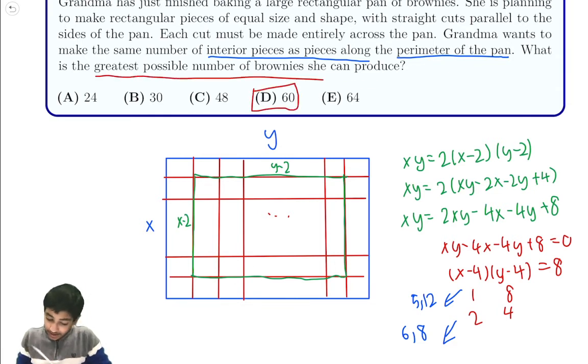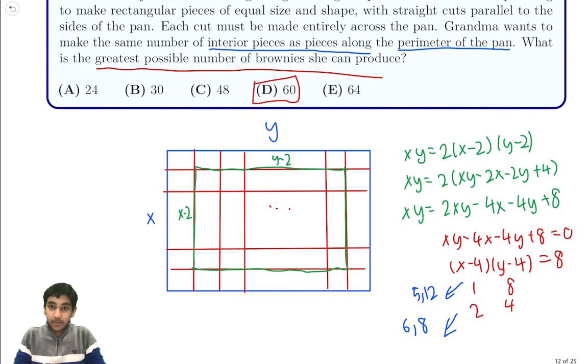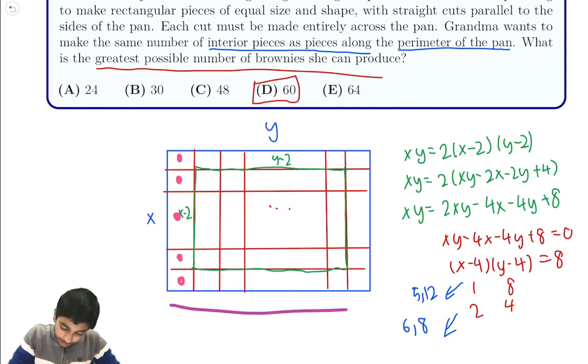A good way to make sure is to check. In 5 times 12, how many pieces would we have on the perimeter? We would have 5 pieces on top, 5 pieces on bottom, 12 pieces on each side. Then we would have 4 corner pieces overcounted. So we would have 30 pieces on the exterior.